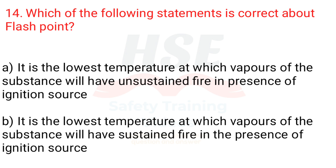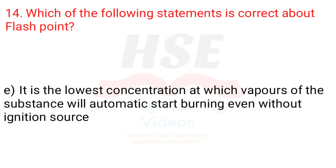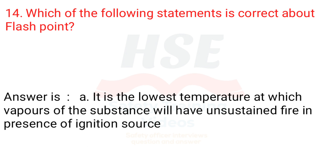Question 14: Which of the following statements is correct about flash point? A. It is the lowest temperature at which vapors of the substance will have unsustained fire in the presence of an ignition source. B. It is the lowest temperature at which vapors of the substance will have sustained fire in the presence of an ignition source. C. It is the lowest temperature at which vapors of the substance will automatically start burning even without the presence of an ignition source. D. It is the lowest concentration at which vapors of the substance will have sustained fire if once ignited. E. It is the lowest concentration at which vapors will automatically start burning without an ignition source. The answer is A.